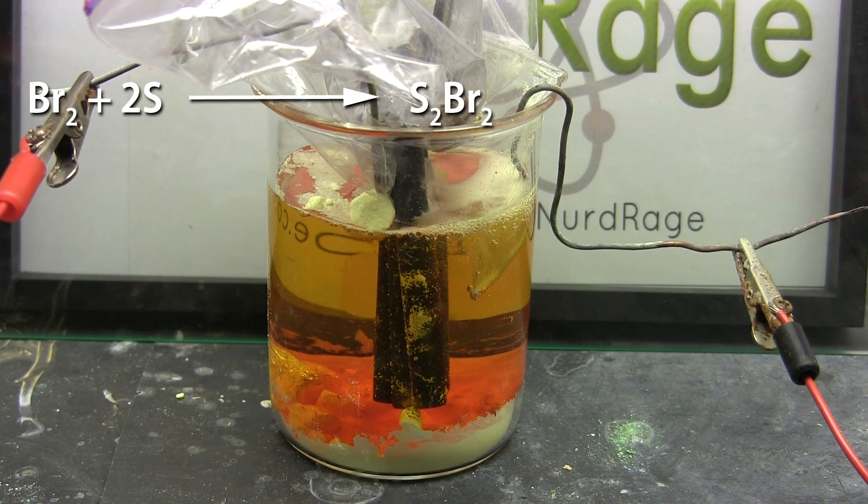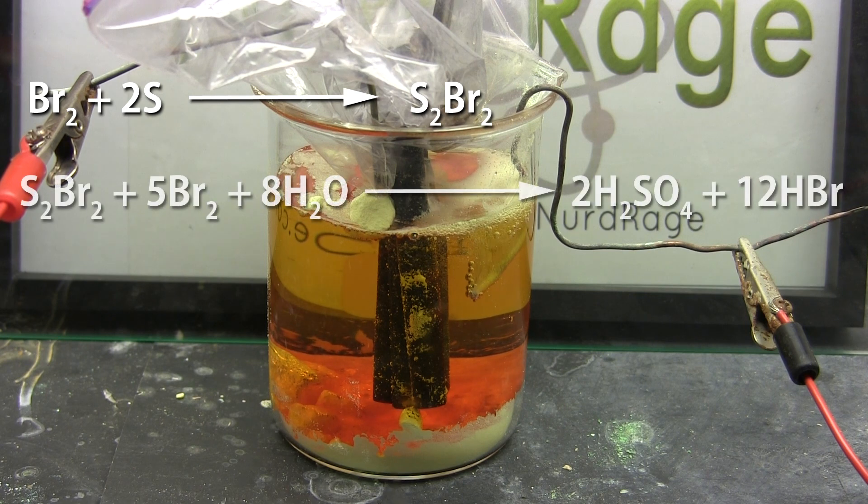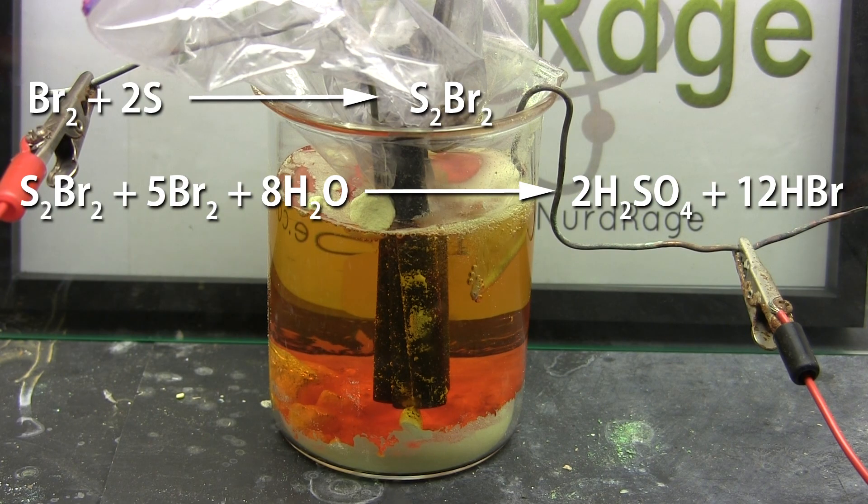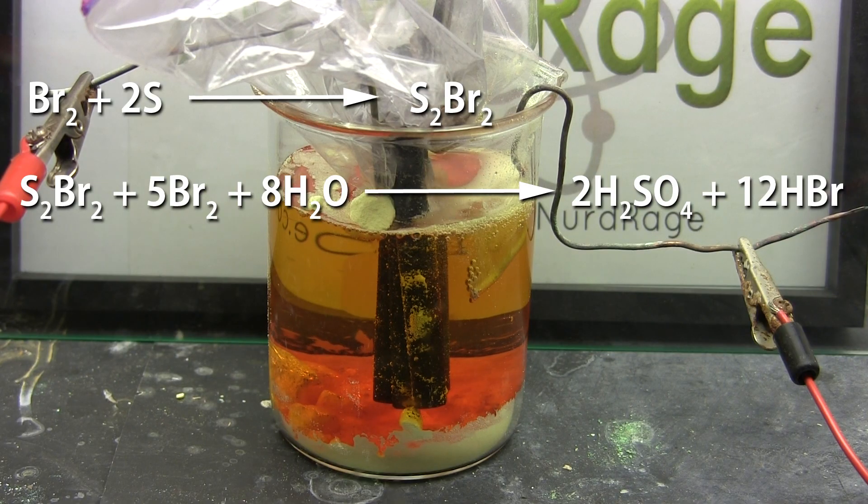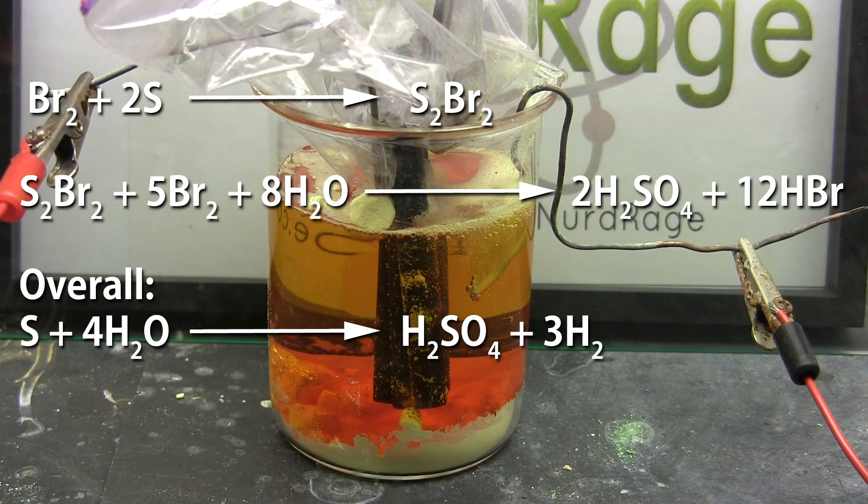The reaction is actually more complex than this with polysulfanes being produced but I won't get into that. Anyway the disulfur dibromide slowly reacts with water and more bromine to produce sulfuric acid and hydrobromic acid. The hydrobromic acid goes on for further electrolysis so it's essentially a catalyst. The overall reaction is water and sulfur producing hydrogen and sulfuric acid.